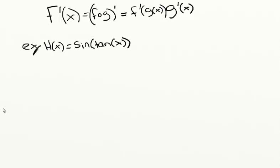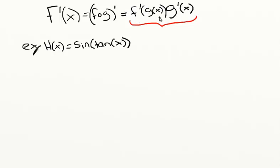Welcome to Math 154 videos. In this video we're going to be talking about the chain rule. I have that written up here where we have F prime of x, where capital F is a composition of functions, and the derivative is equal to this. I like to think about this as f prime being the derivative of our outside function and g prime being the derivative of our inside function.